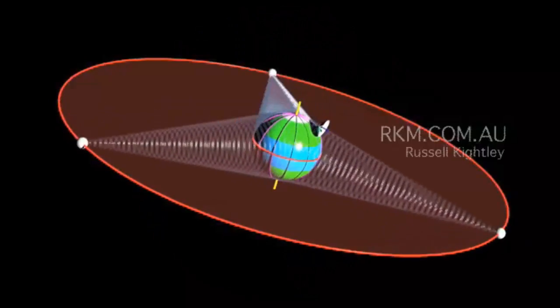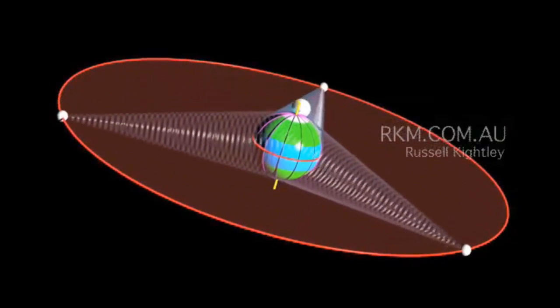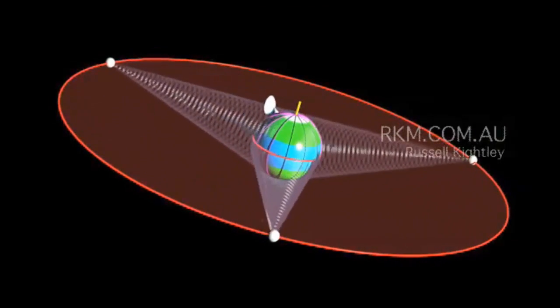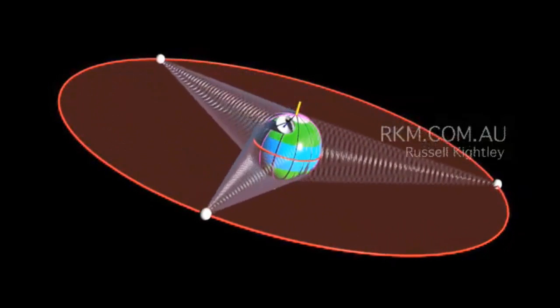In fact, we can achieve continuous coverage of essentially the entire globe by planting just three satellites strategically in the geostationary orbit.